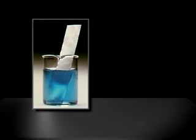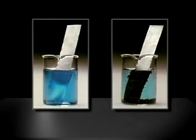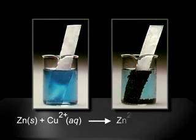When a strip of zinc metal is immersed in an aqueous copper 2 sulfate solution, electrons are transferred from zinc to the copper 2 ions. Copper metal deposits on the zinc strip and collects at the bottom of the flask. Zinc atoms are oxidized to zinc 2 ions, which enter the solution. This spontaneous oxidation-reduction reaction is summarized in the chemical equation shown.